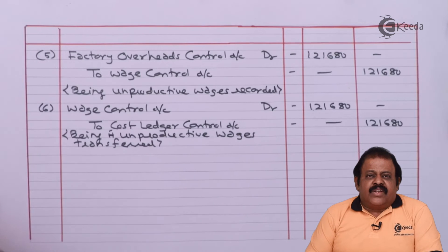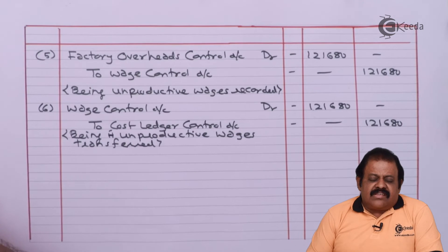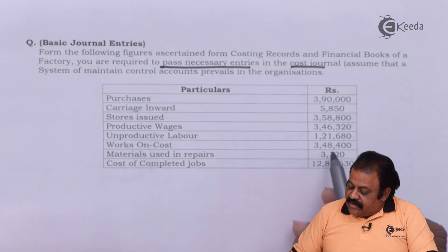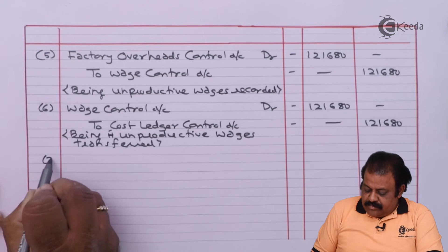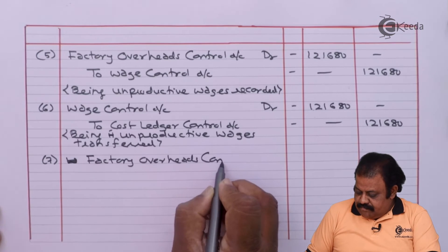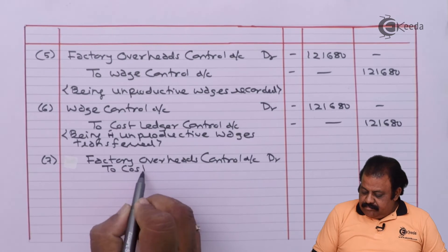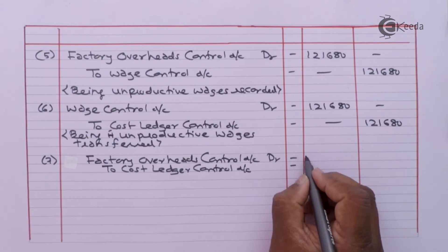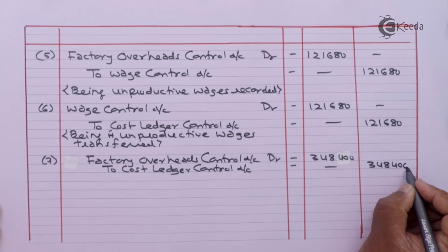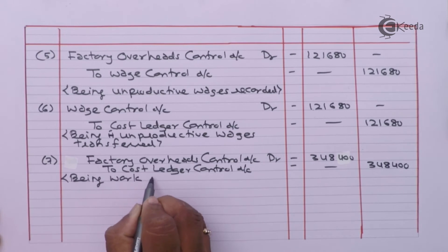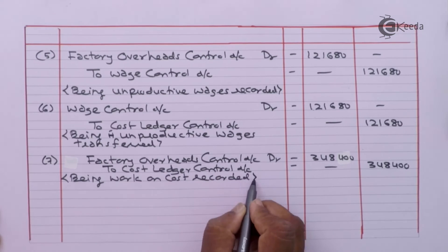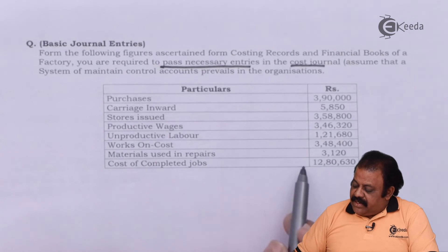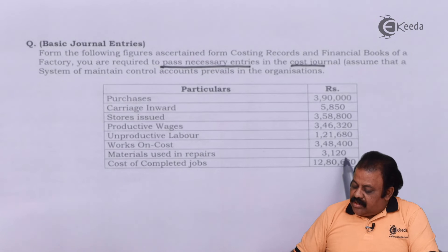Works on cost 3,48,400. Entry: Work in Progress Control Account debit to Factory Overheads Control Account 3,48,400, being works on cost recorded. Material used in repairs 3,120.